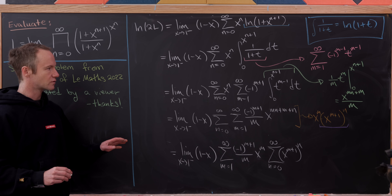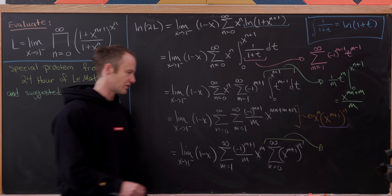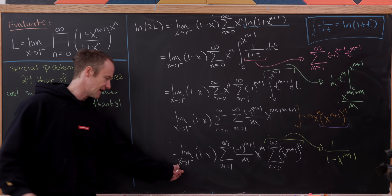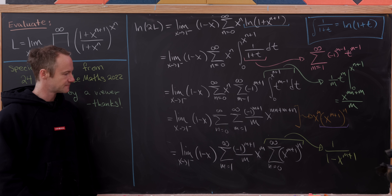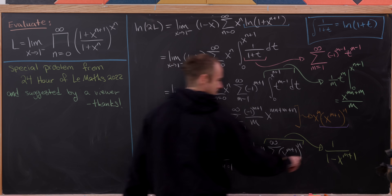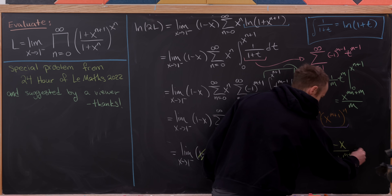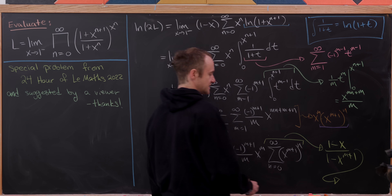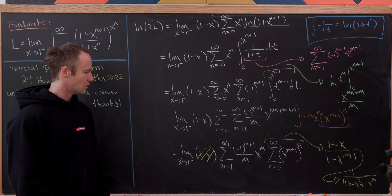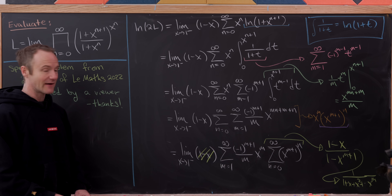That gives us the limit as x goes to one from below of (1 − x) times the sum as m from one to infinity of (−1)^(m+1)/m · x^m times the sum as n from zero to infinity of (x^(m+1))^n. By the geometric series rule, the inner sum has first term one and common ratio x^(m+1), so it sums to 1/(1 − x^(m+1)). We can then bring in the (1−x) factor to get (1−x)/(1−x^(m+1)), which simplifies to 1/(1 + x + x² + ⋯ + x^m).